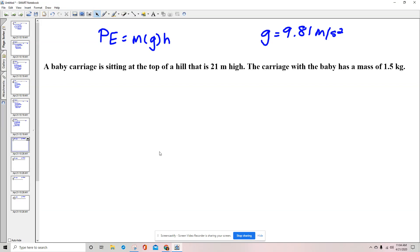This video is going to go through potential energy calculations. We're going to calculate the potential energy of a baby carriage that is sitting at the top of a hill that is 21 meters high. The carriage with the baby has a mass of 1.5 kilograms.